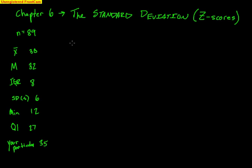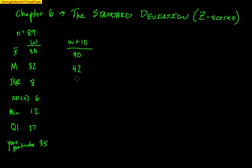If I say my stopwatch was off and I have to add 10 seconds to everybody's score: the mean gets affected by addition, going up to 40. The median goes up to 42. Measures of spread — IQR and standard deviation — remain completely unchanged when all you're doing is adding. The minimum would go up to 22. Q1, a measure of position, goes up to 37. And your particular score would become 45.